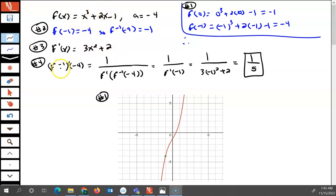And we were trying to find the derivative of the inverse function at negative 4. We had a equals negative 4. So we needed to find out the x value that we could plug into the function that would result in the function equaling negative 4.